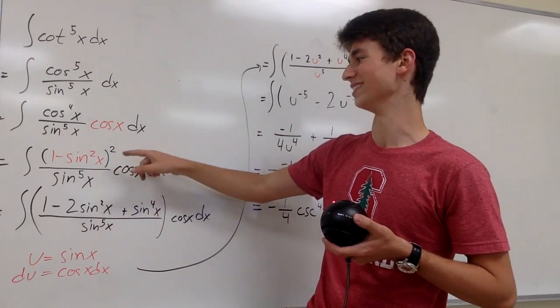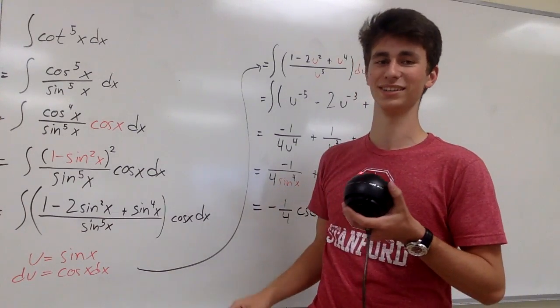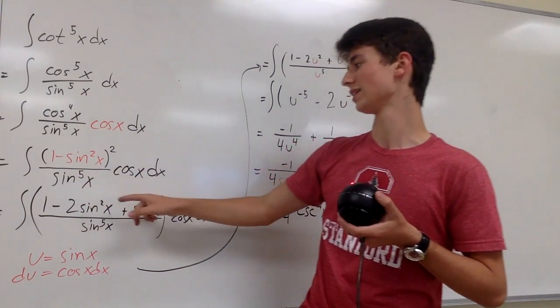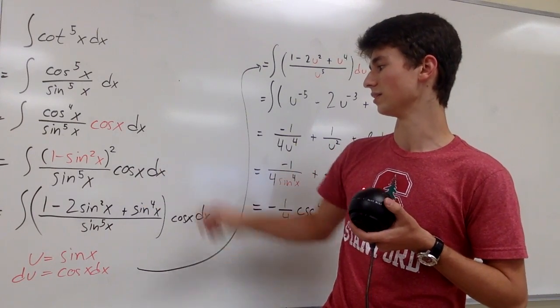So we get one minus sine squared of x all squared, divided by sine to the fifth of x, and we multiply it by cosine x dx.